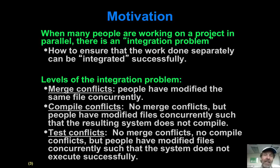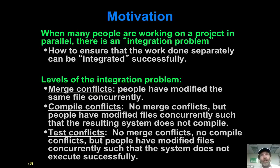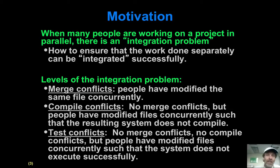A third level is test conflicts — that's when everything compiles and everything kind of runs, but there have been concurrent changes to the system such that the tests don't pass. Maybe you were relying on a method which did some kind of computation and returned some value, and then someone unwittingly made a change to optimize it. In so doing, they changed its semantics so it didn't return exactly the same value as before, thus leading to a test failure when you run the test on your code which depends on their code. Your code no longer works through no fault of your own.